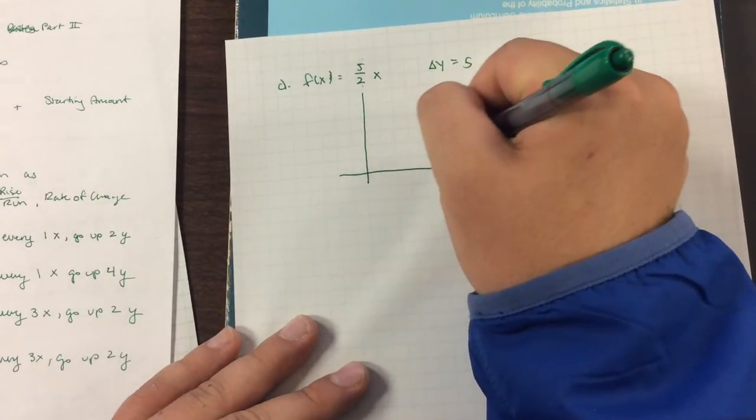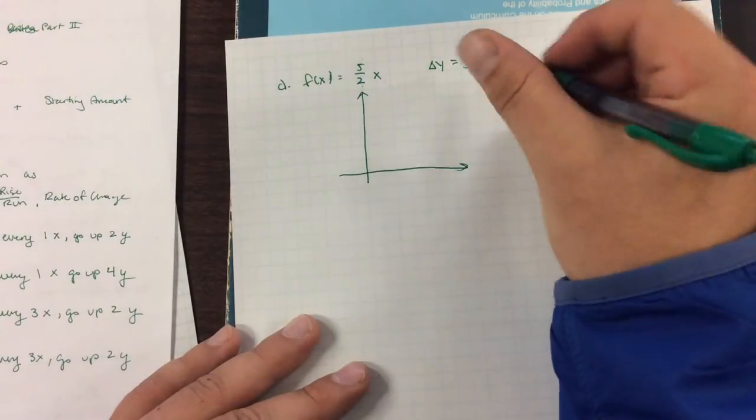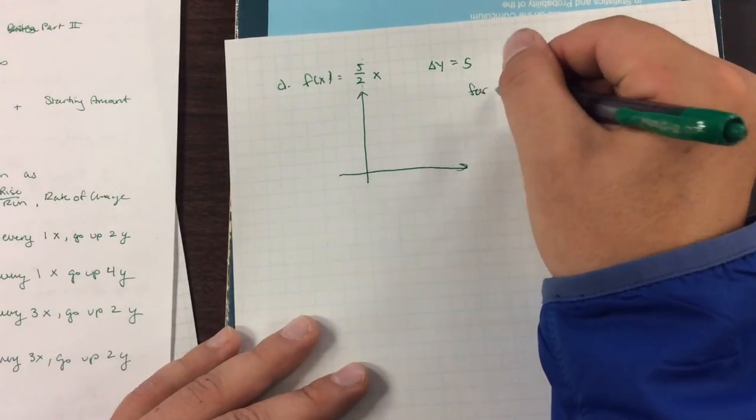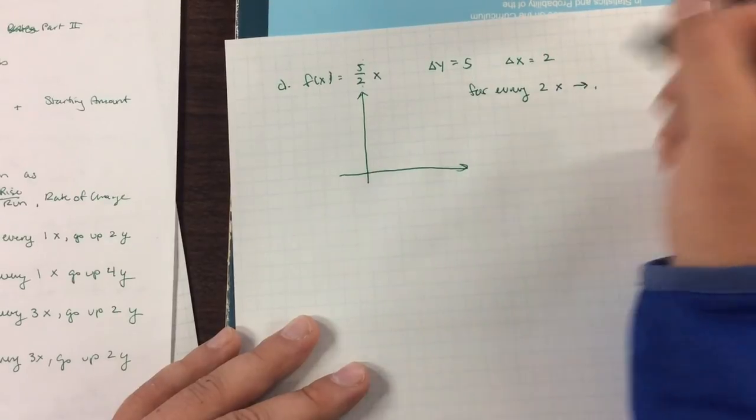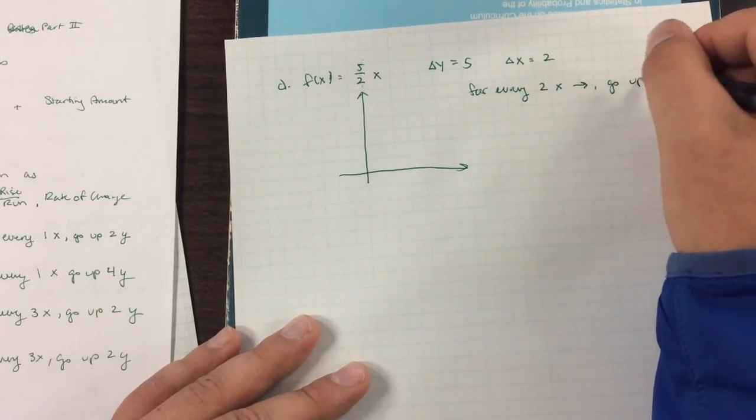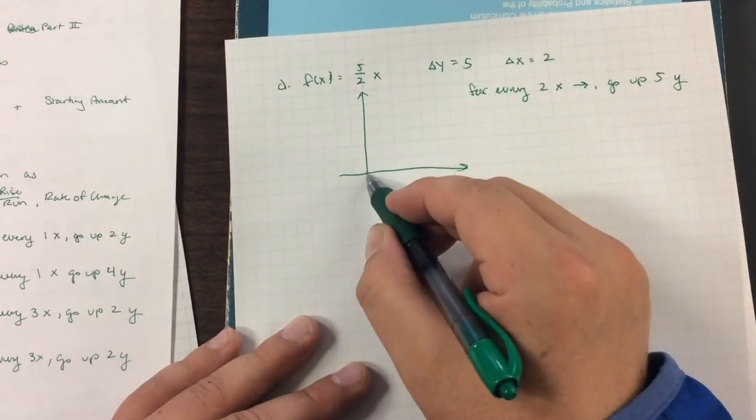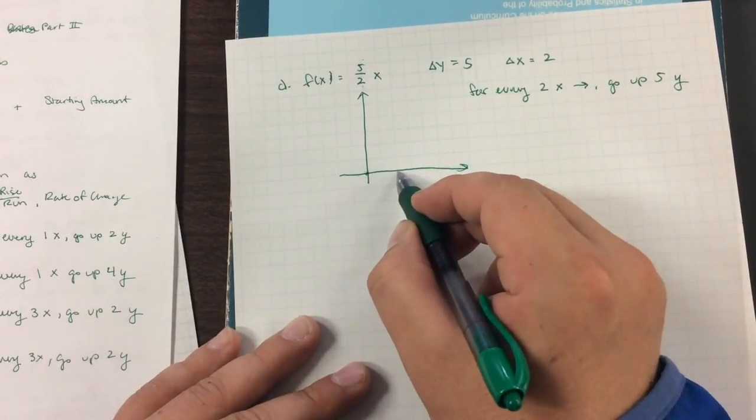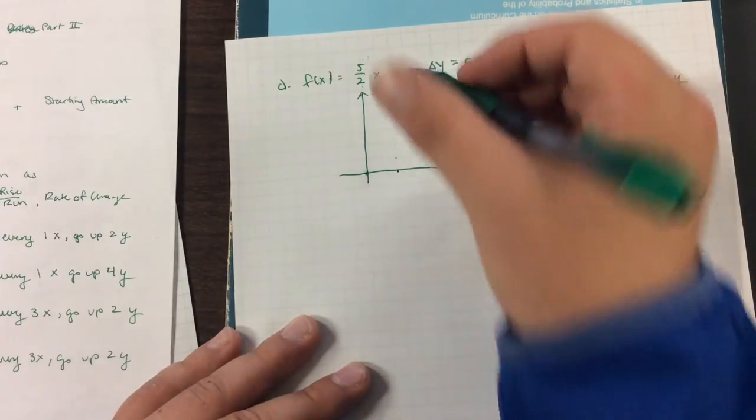There's no starting amount. So I'm going to start at 0. And it seems that for every 2x to the right, go up 5y. So I'm going to start at 0. I'm going to go over 2. And then up 5. 1, 2, 3, 4, 5.